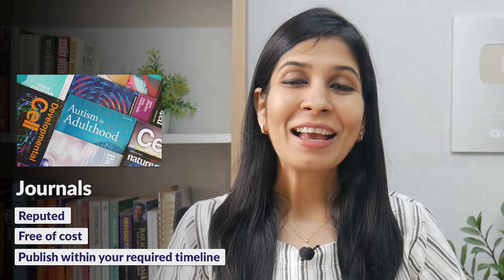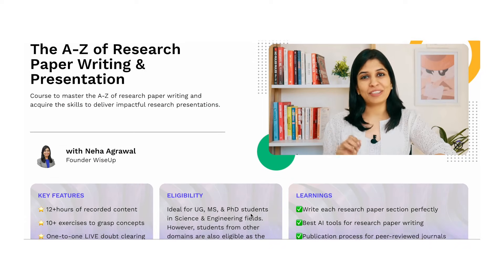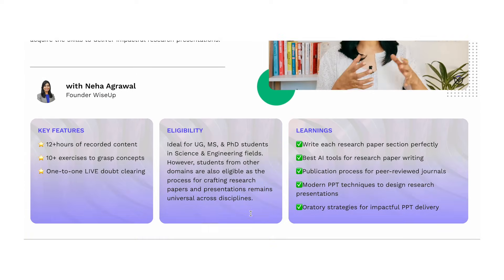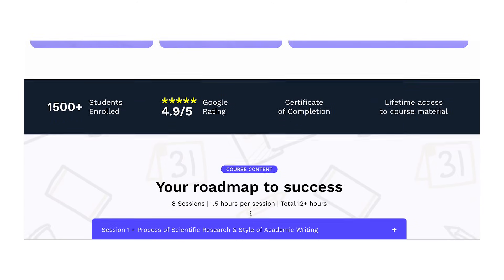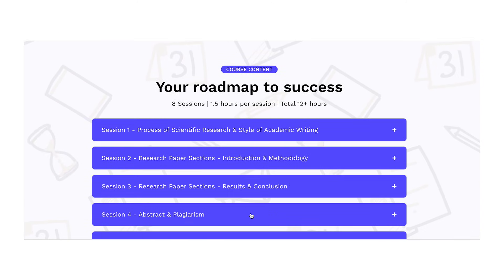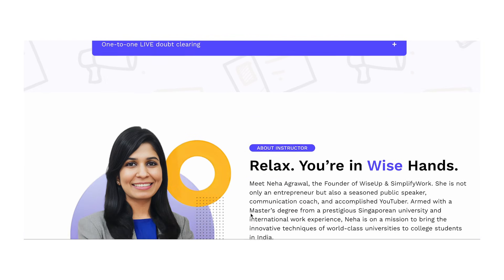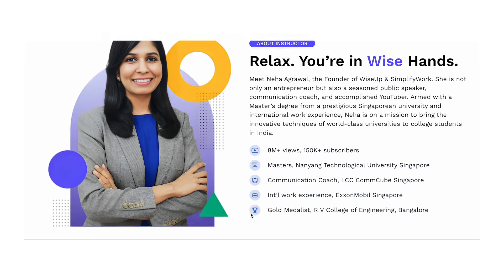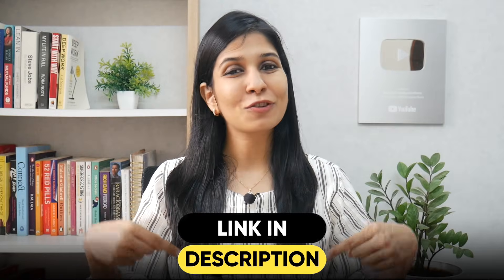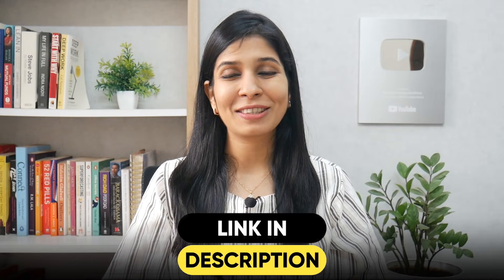In this way, you can ensure that the journals you are choosing are reputed, free of cost, and published within your required timeline. If you wish to learn in detail how to write a research paper, what AI tools you can use to make this process simpler, and go into detail of the publication process, you can join me for my course on A to Z of Research Paper Writing. The link is in the description and in the pinned comment. Thank you so much for watching this video, and I wish you a fantastic career ahead.